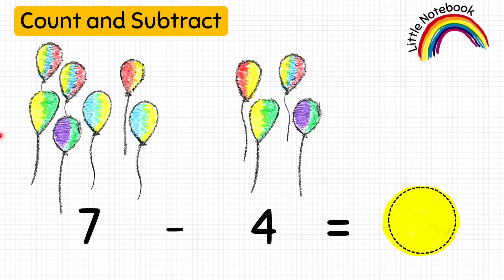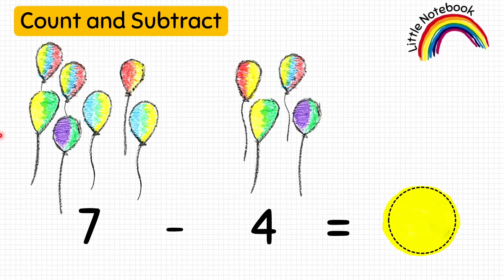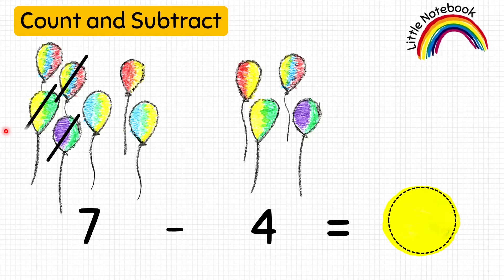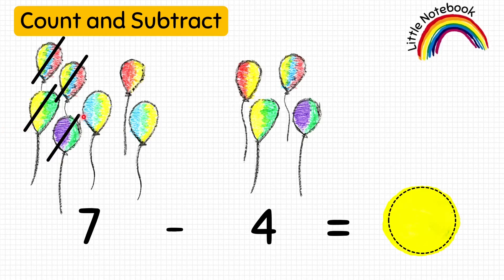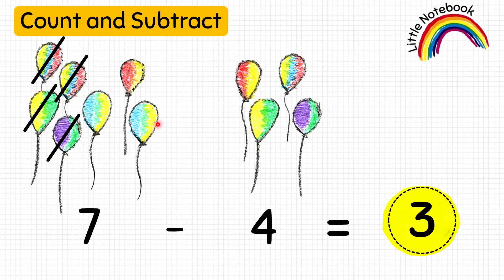Next question: seven balloons minus four balloons equals how many balloons? To subtract, let's cross four balloons — one, two, three, four. Now how many balloons are we left with? One, two, three — so our answer is three. Seven minus four equals three.